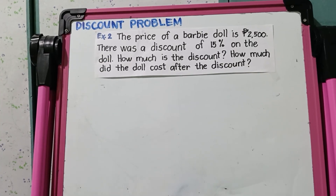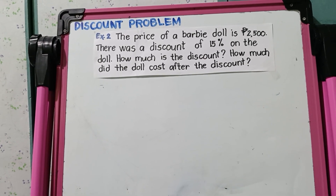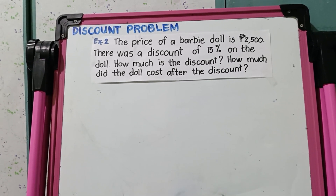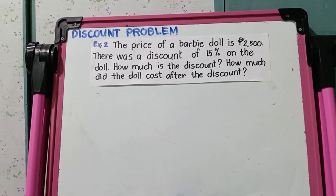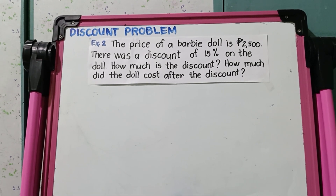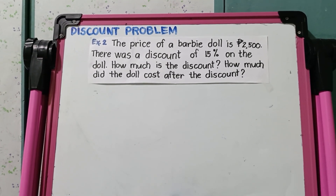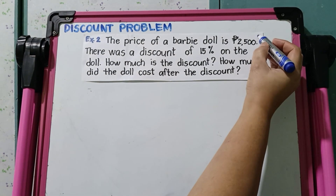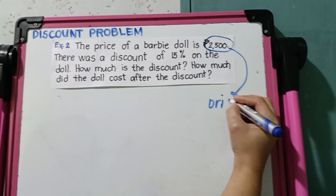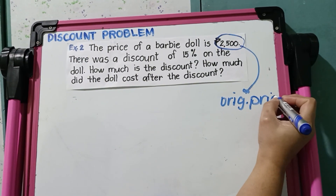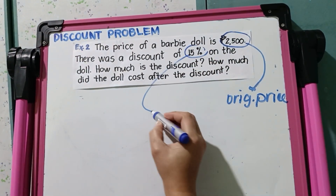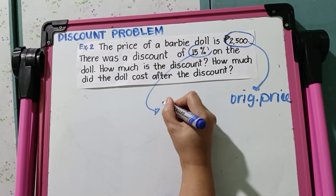Let's go now to problem number 2. The price of a Barbie doll is 2,500. There was a discount of 15% on the doll. How much is the discount? And how much did the doll cost after the discount? To answer this, we need to identify the given. Based on the problem, we have 2,500 — this is our original price of the Barbie doll — and the 15% here is the rate of discount.